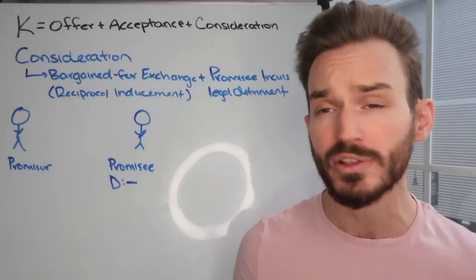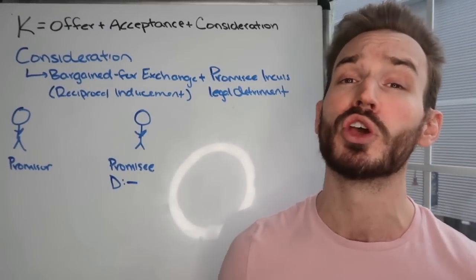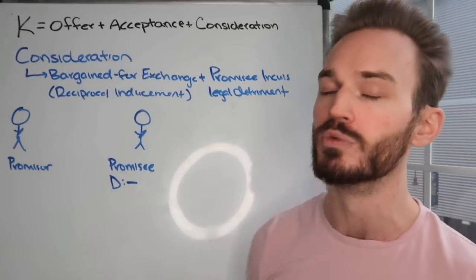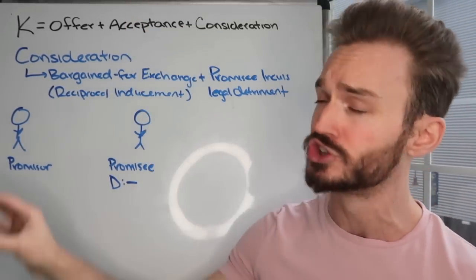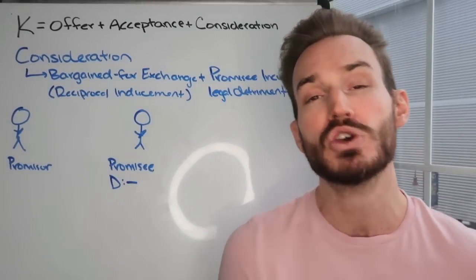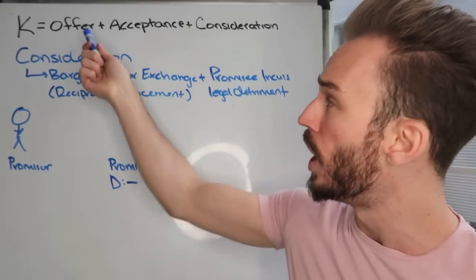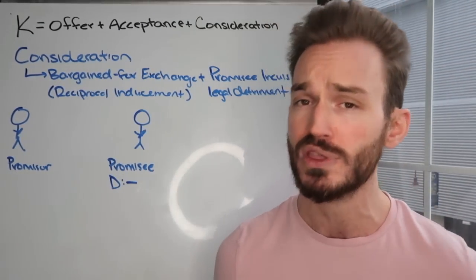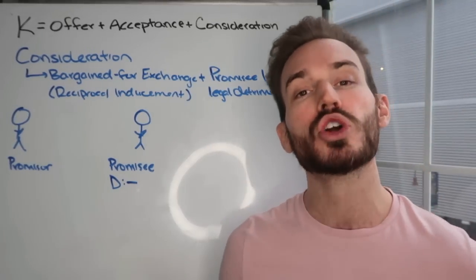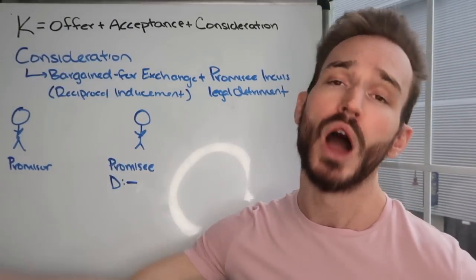Thus far, we've been primarily focused on offer and acceptance — how a person goes about forming an offer and how that offer is accepted. We call that mutual assent between the parties. If we can show that the mutual assent is supported by consideration, then we're going to have a traditional enforceable contract.